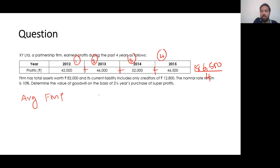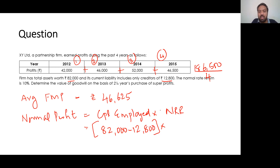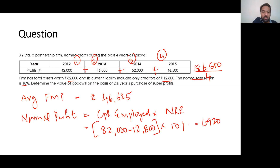Next, calculate Normal Profit. Formula: Capital Employed × Normal Rate of Return. Capital Employed = Total Assets minus Current Liabilities = 82,000 minus 12,800 = Rs. 69,200. Normal Profit = 69,200 × 10% = Rs. 6,920.